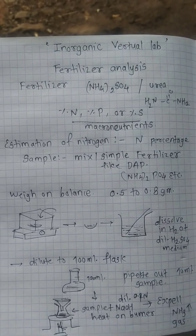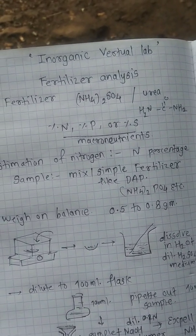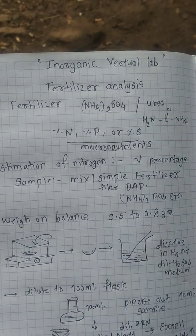Estimation of nitrogen is performed for fertilizer analysis. The percentage of nitrogen is determined from the sample of fertilizers, mix or simple fertilizers like DAP or ammonium sulfate or urea.